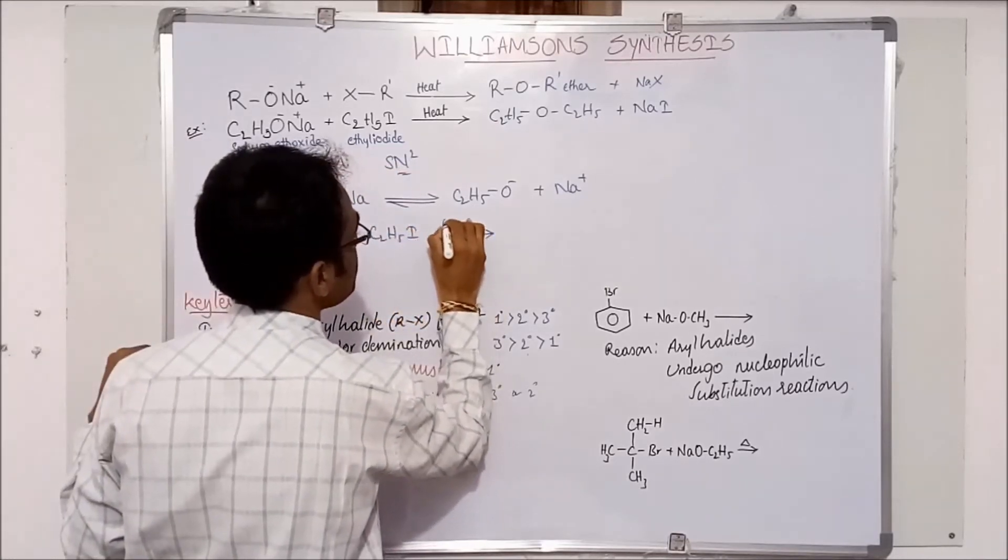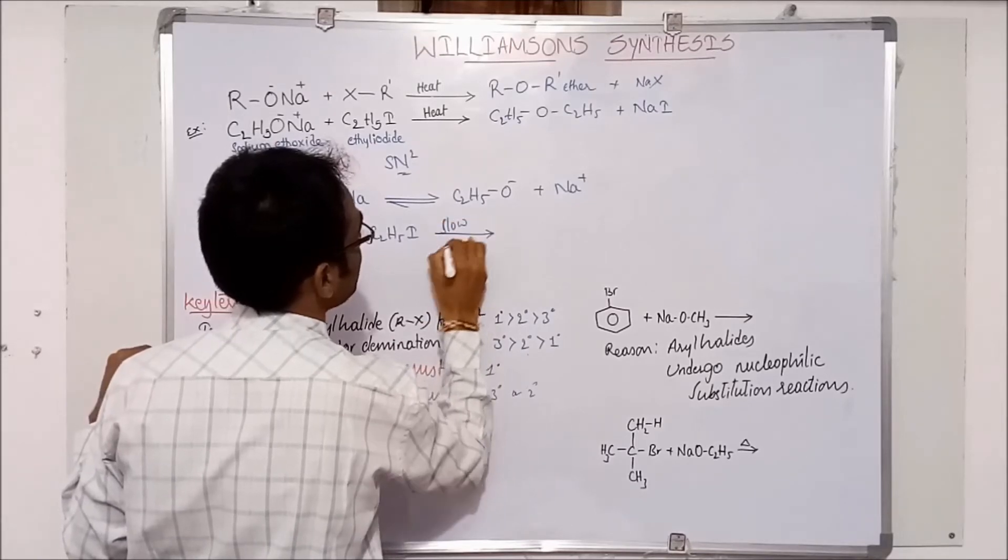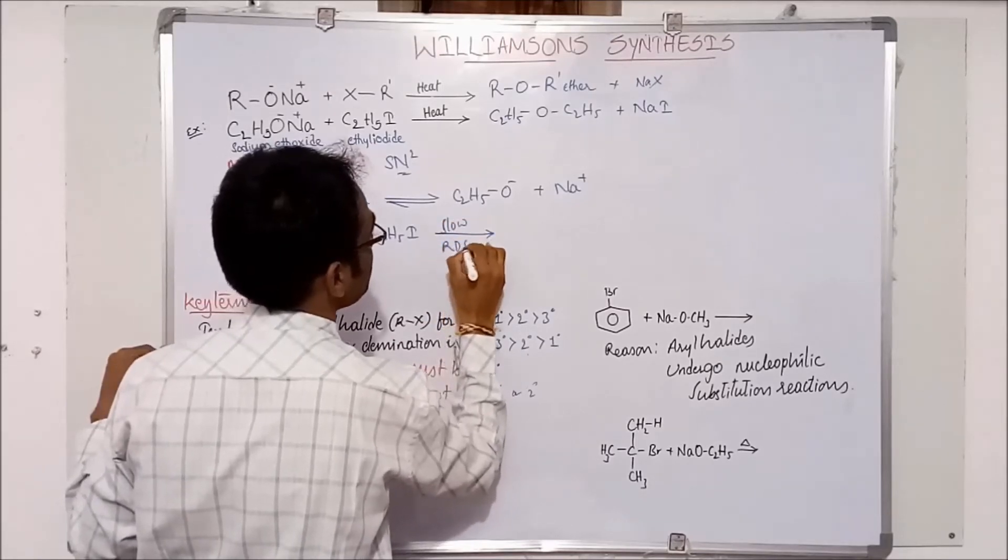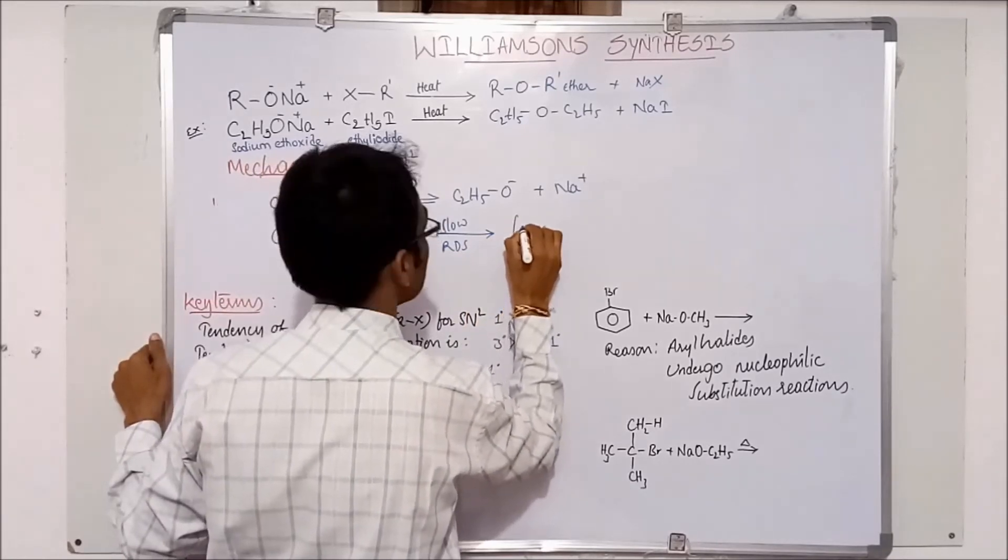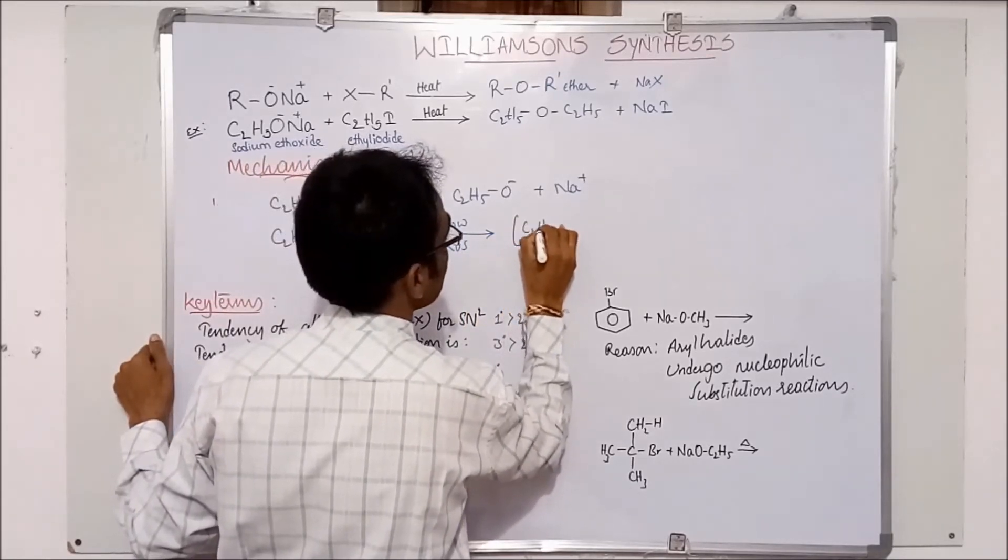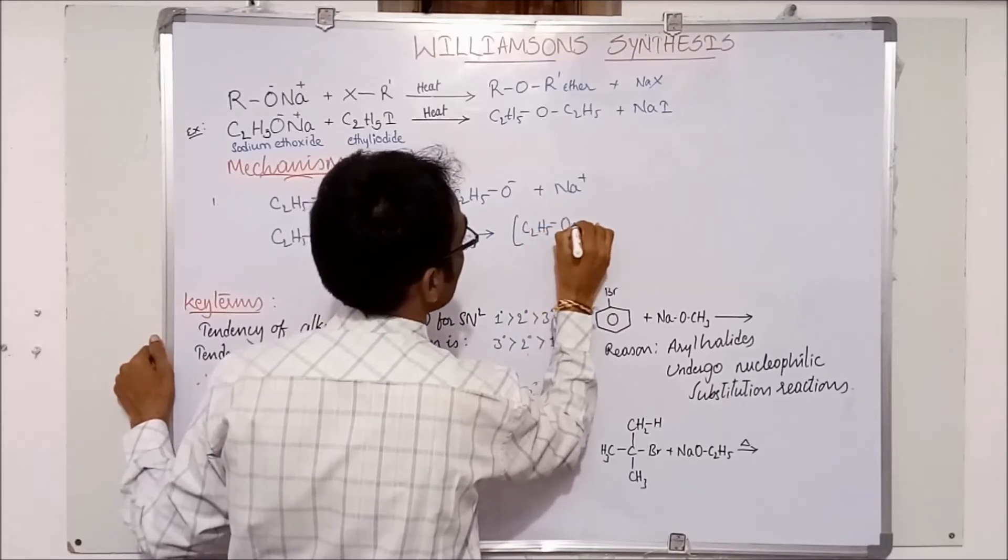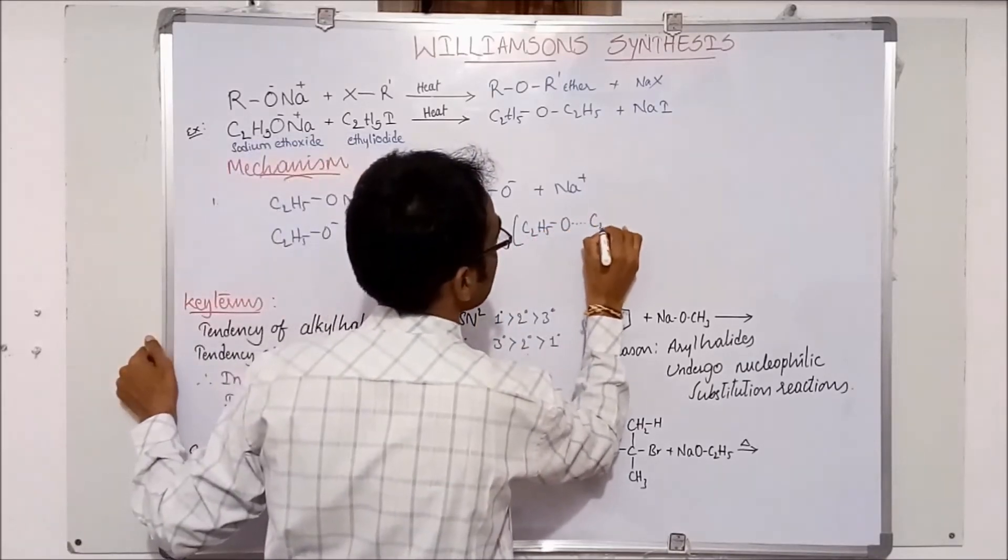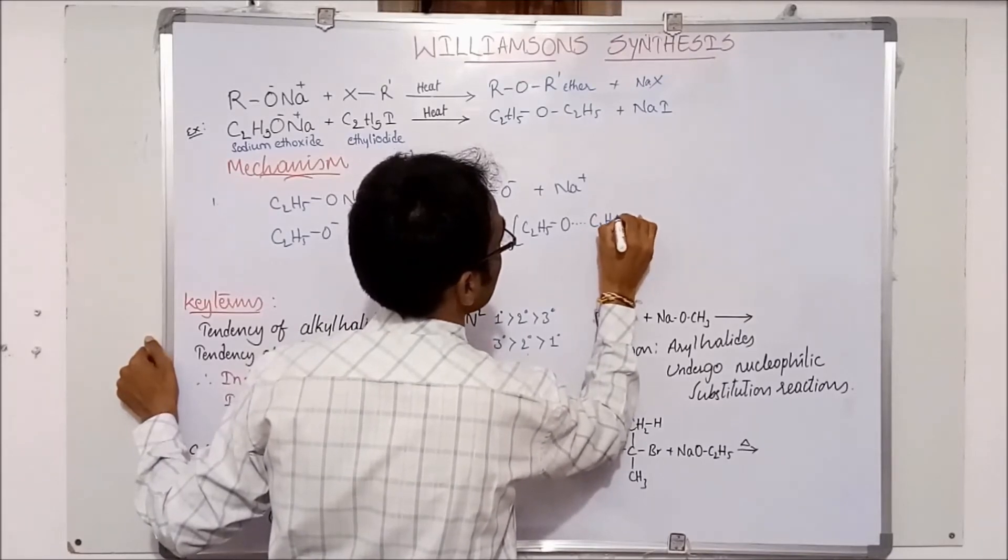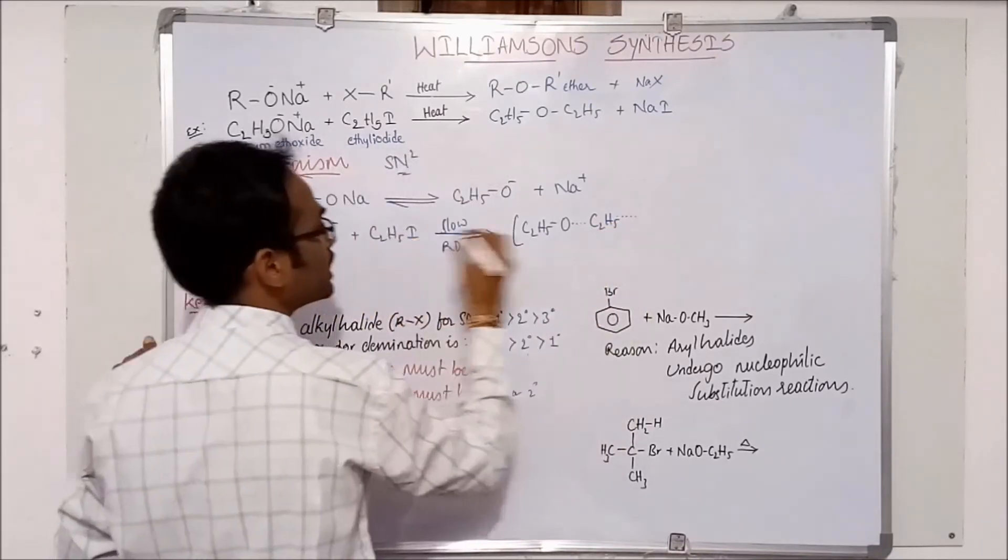It gives you, it is a slow step and a rate determining step. Here it forms an intermediate that is C2H5O which forms bond with C2H5. And here iodine gives the group.